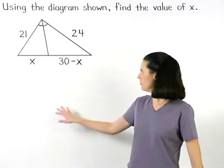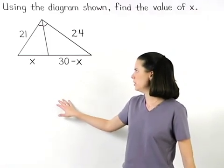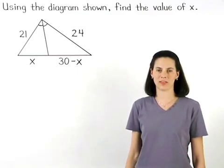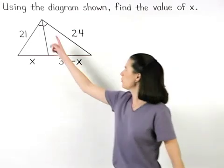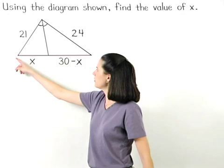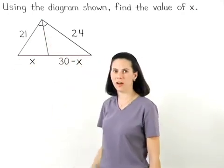Here we're asked to use the diagram shown to find the value of x. Notice that we have a ray that bisects an angle of the large triangle.